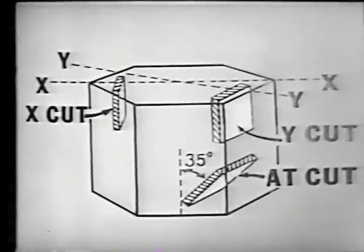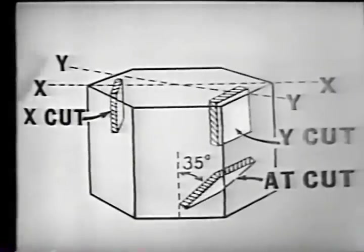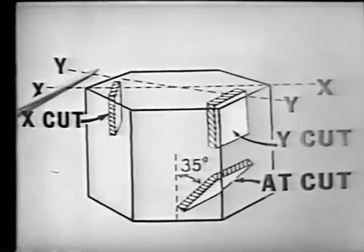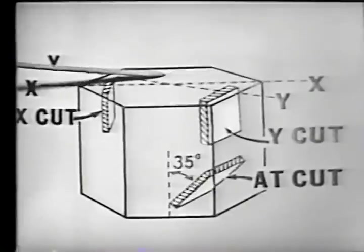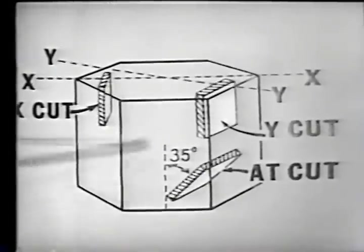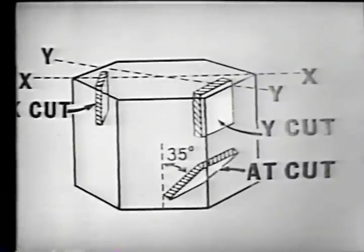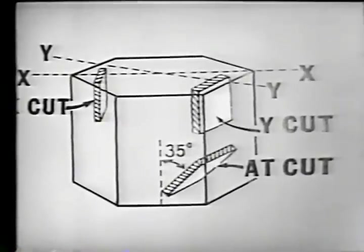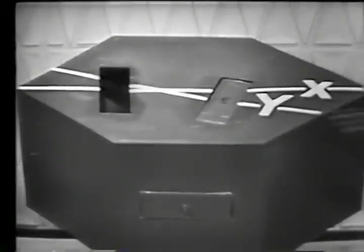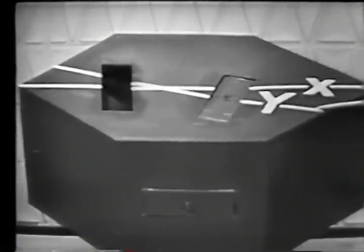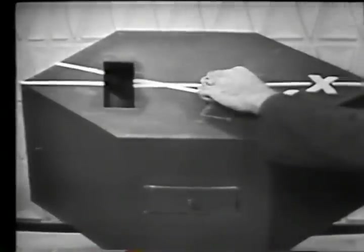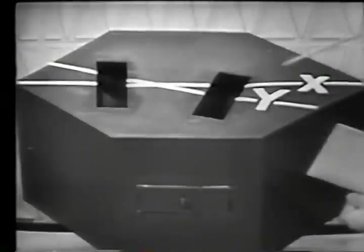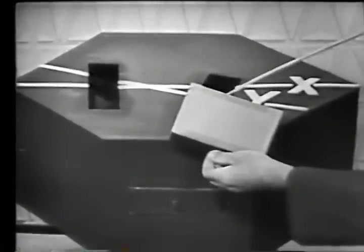For the second cut, we will use the Y-axis, which passed through the face of the crystal. This cut will be taken perpendicular to the Y-axis and it also is parallel to the Z-axis, which ran through the center of the crystal. Since we took it in reference to the Y-axis, it would be known as a Y-cut crystal.